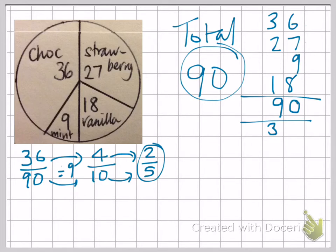Let's do one more. That was our chocolate one. This time let's do strawberry. So for strawberry we've got 27 out of the 90 children. If we simplify again, we can divide by 9.